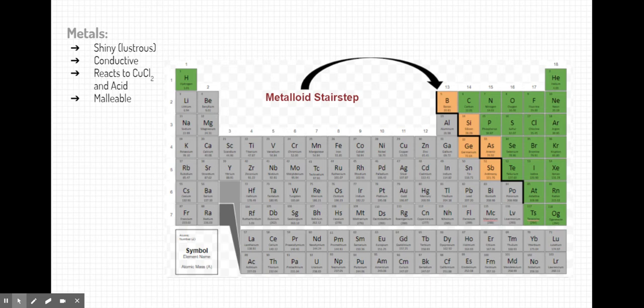The elements on the right of the stair step are non-metals. They're kind of the opposite of metals. They're dull in color. They don't conduct heat or electricity. They don't react with copper-2-chloride and acids, and they're very brittle. If you hit them, they tend to shatter.